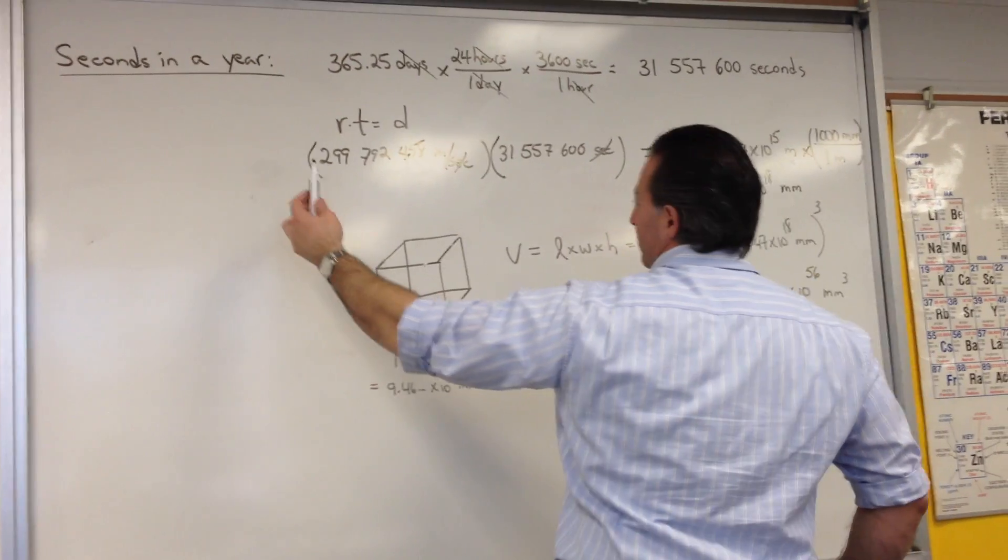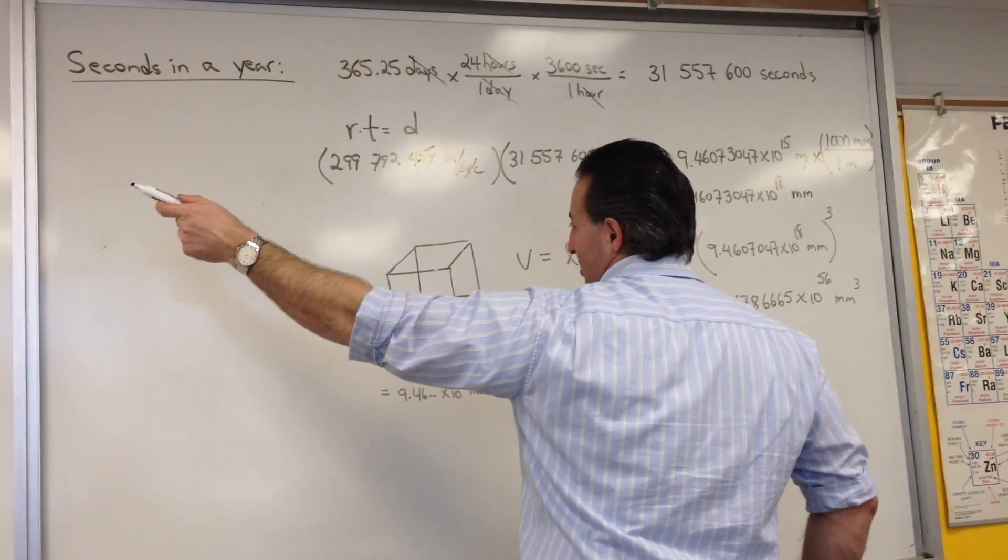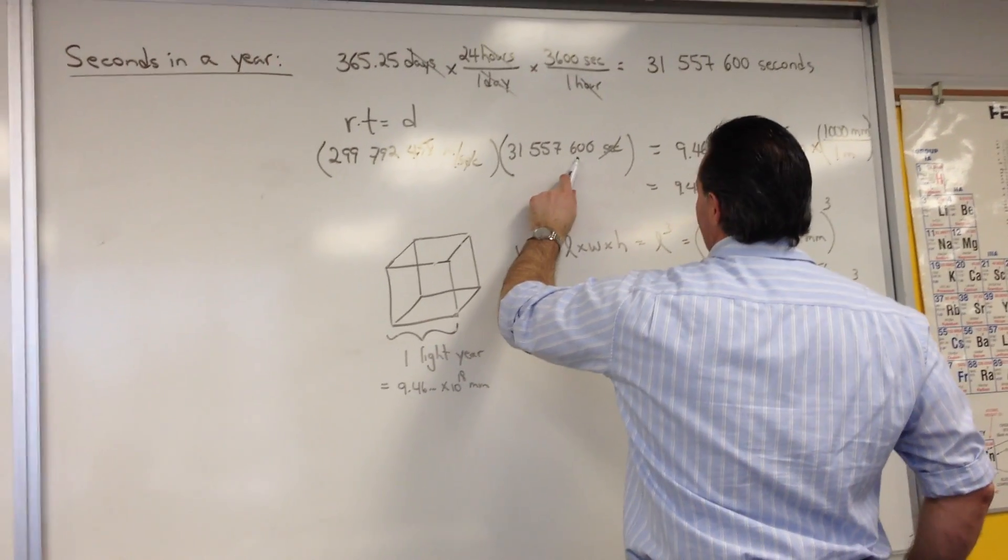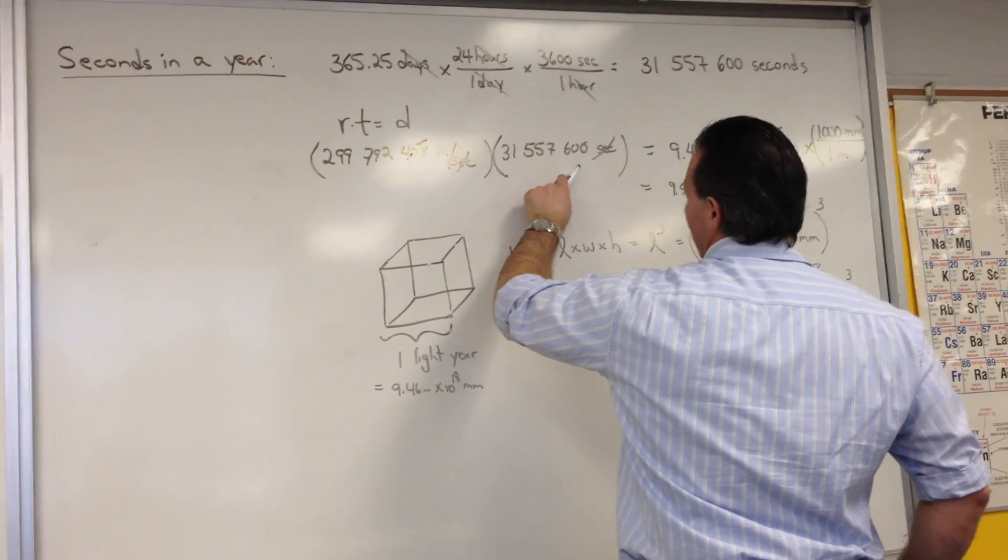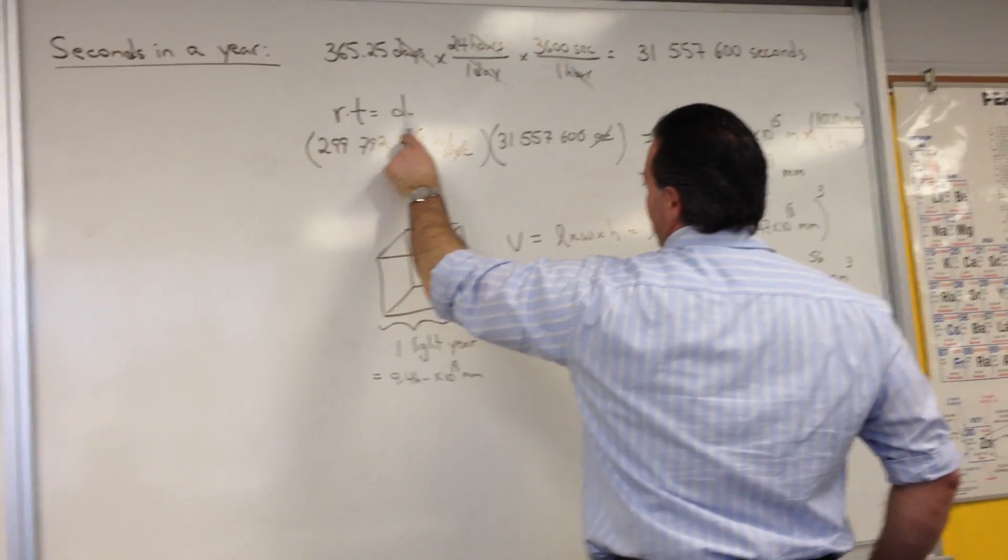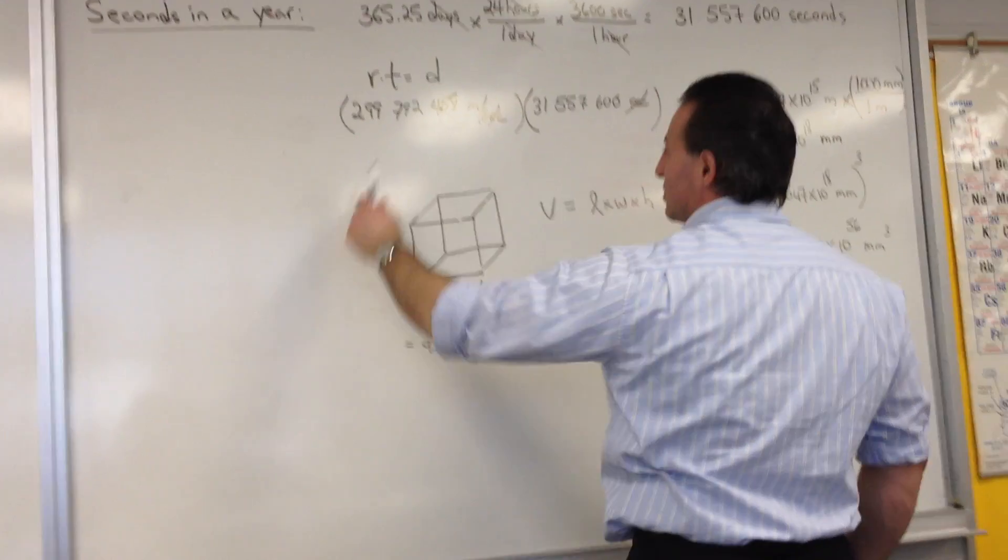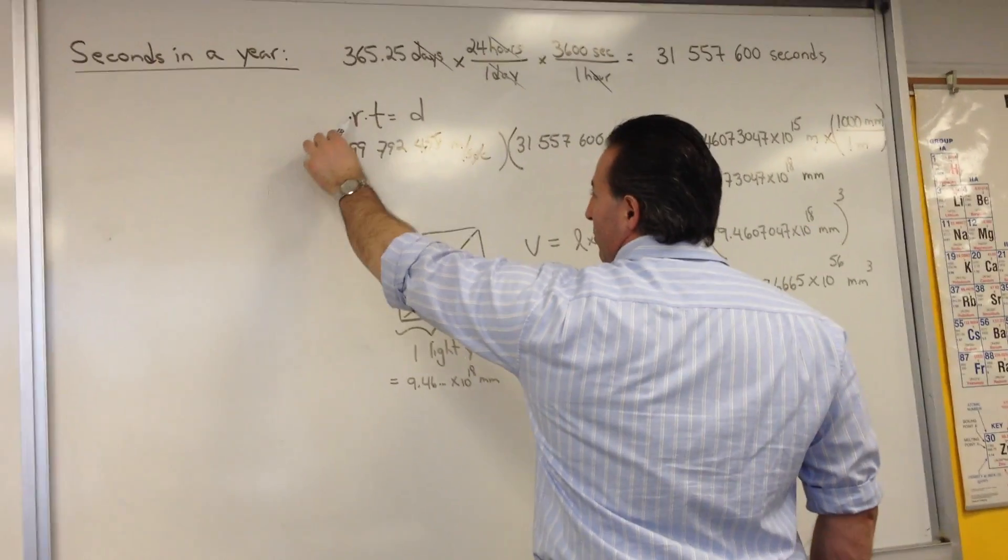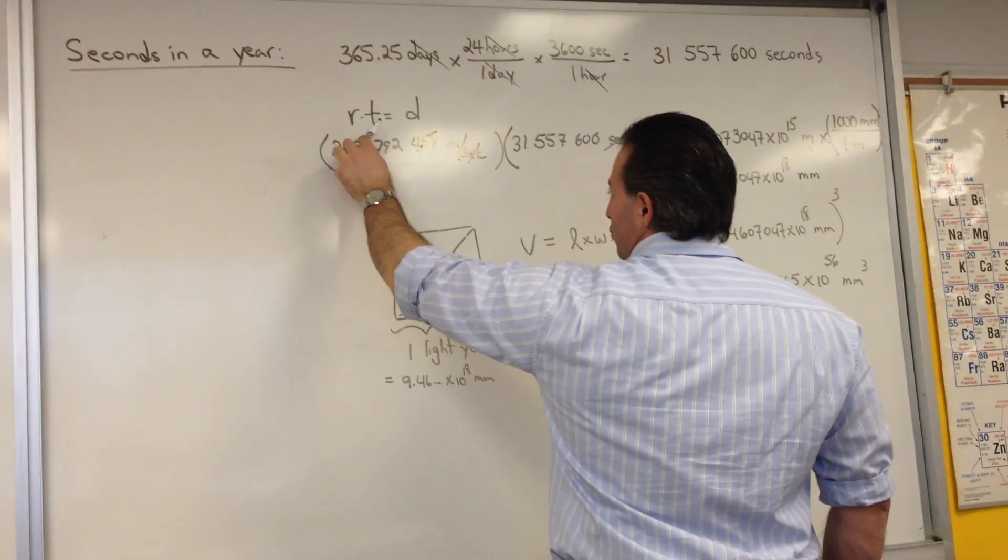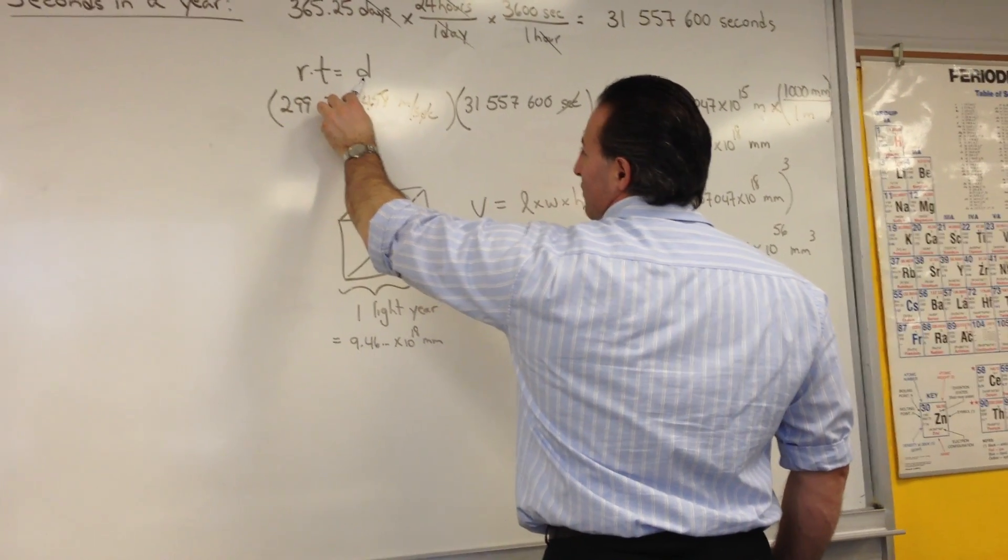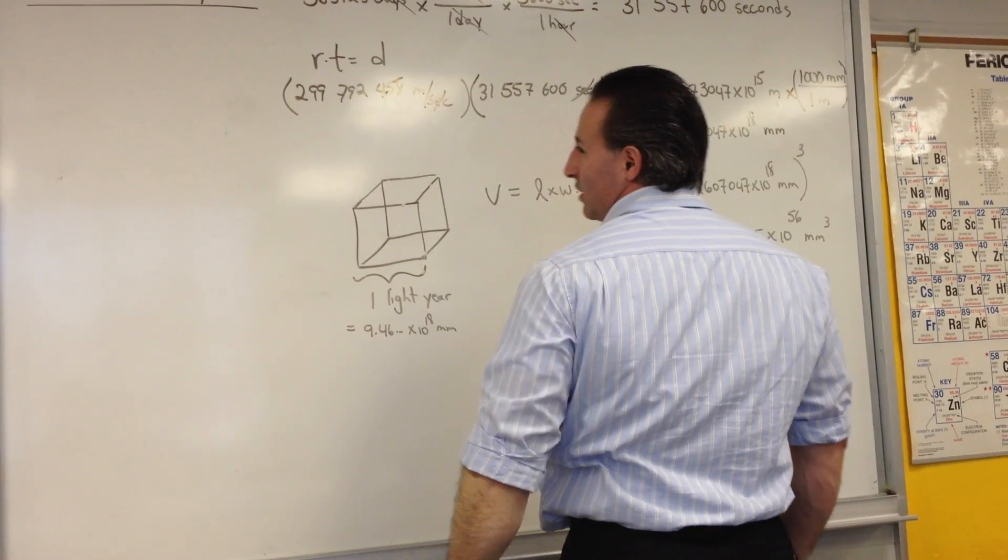We plug in the numbers we've obtained. One is the constant, which is the speed of light. The other one is the number we calculated for the number of seconds in a year. Into the equation rate times time equals distance. We can use this equation when we say, if you're going 100 kilometers per hour, you drive for 5 hours. How far do you go? 5 times 100, 500 kilometers.